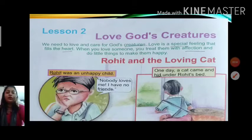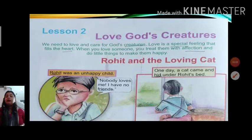Now come to the story. The story name is Rohit and the Loving Cat. What happened, children? Yes, Rohit was an unhappy child because nobody loves him. He always thought nobody loves me and I have no friends. One day a cat came and hid under Rohit's bed.